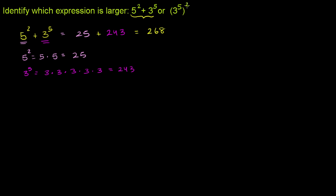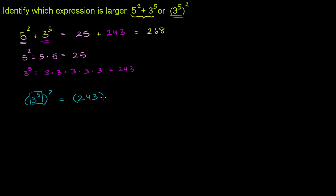Now let's see what 3 to the fifth squared is. We already figured out that 3 to the fifth is 243. So this expression right here is 243, and we're going to square that entire thing. So this is equal to 243 squared.